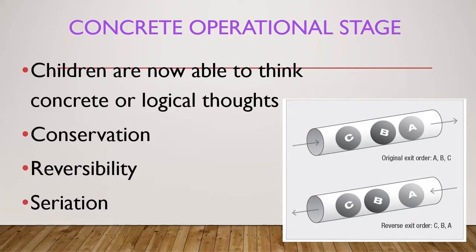In the concrete operational stage, children are now able to think in concrete or logical terms, including conservation, reversibility, and seriation. This stage is characterized by logical operations such as conservation, reversibility, and classification allowing logical reasoning. Examples of concrete operational thinking include telling tales, planning a party, building with blocks, and comparing candy bars.